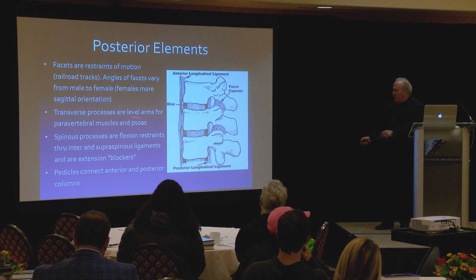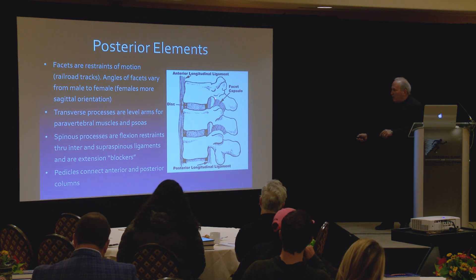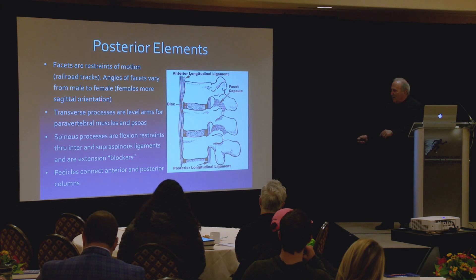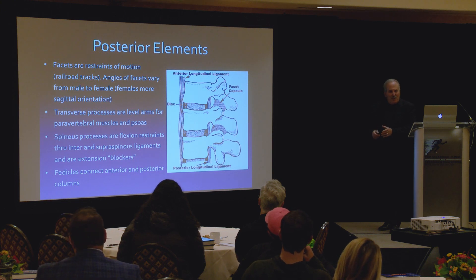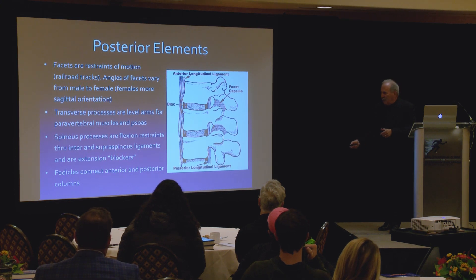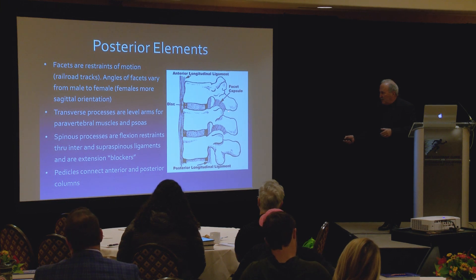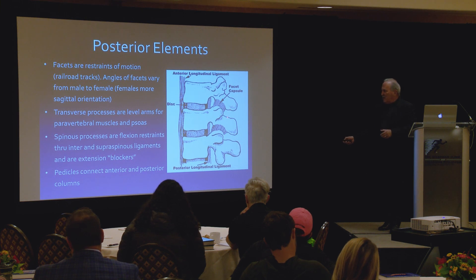The posterior elements: going through the pedicle into the back, we have facets — the restraints of motion, sometimes called railroad tracks. The angles of the facets vary between male and female; females have a more sagittal orientation, which means less ability to resist shear forces, so women will have greater facet problems than men. Spinous processes are flexion restraints, because of the interspinous and supraspinous ligaments, and they are extension blockers — as you bend back, they start to abut each other. The pedicles connect the anterior and posterior columns.